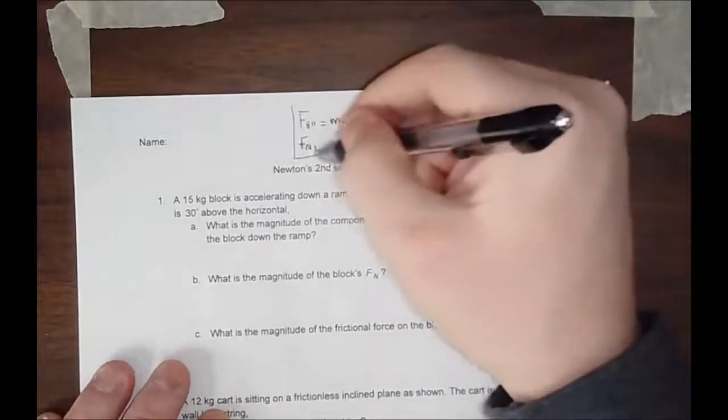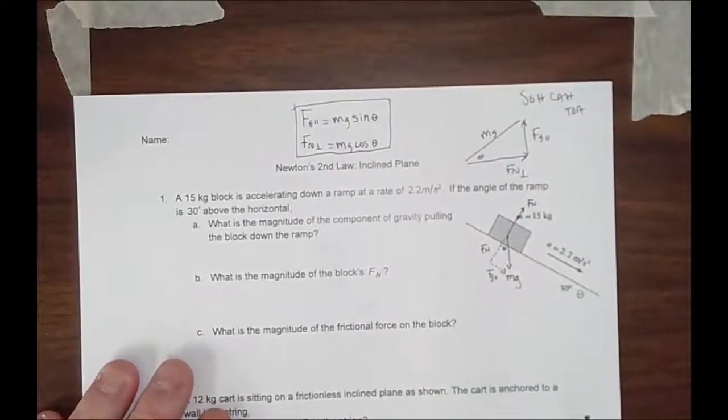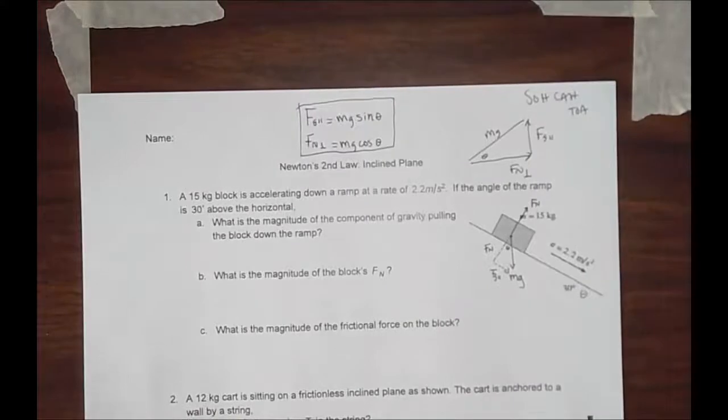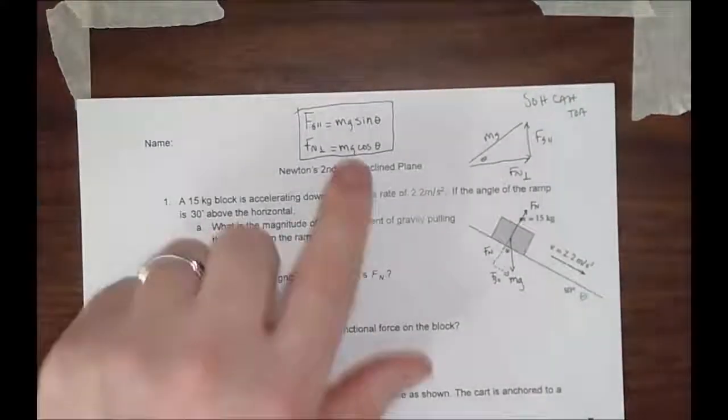And the normal force that is perpendicular to the ramp is equal to MG cosine of theta. These are very, very important equations to remember, especially for AP physics. On the AP physics exam, there are a lot of problems dealing with incline planes.